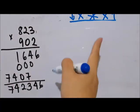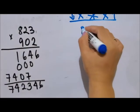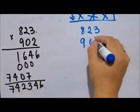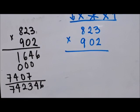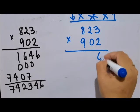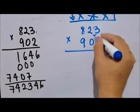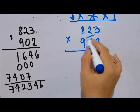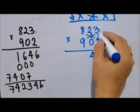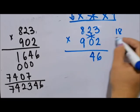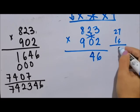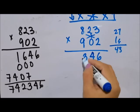Next is the triple cross. 823 times 902. First: 3 times 2 is 6. Next number, the cross: 2 times 2 is 4, 3 times 0 is 0, so 4. Next number is the triple: 3 times 9 is 27, 2 times 0 is 0, 8 times 2 is 16, so 27 plus 16 is 43. So 3, carry 4.